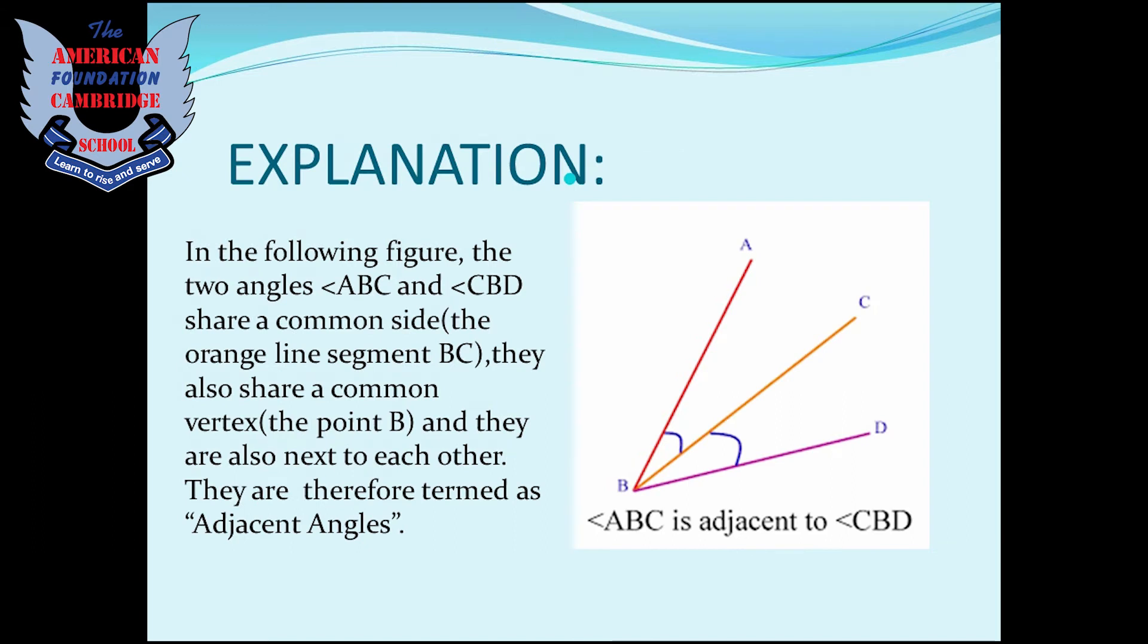Look at the figure. There are two angles in the figure that are angle ABC and angle CBD. They share a common side, that is the orange line segment BC. They also share a common vertex, that is point B, and they are also next to each other. Therefore they are called adjacent angles.